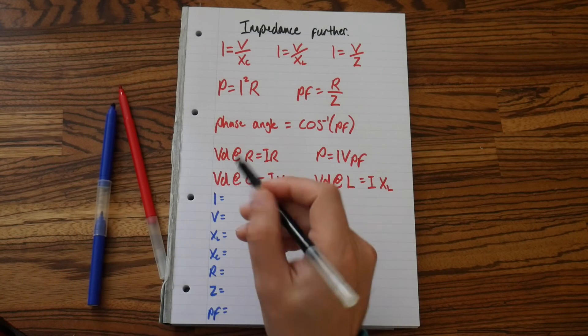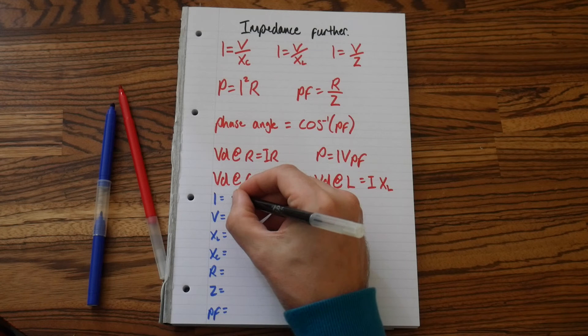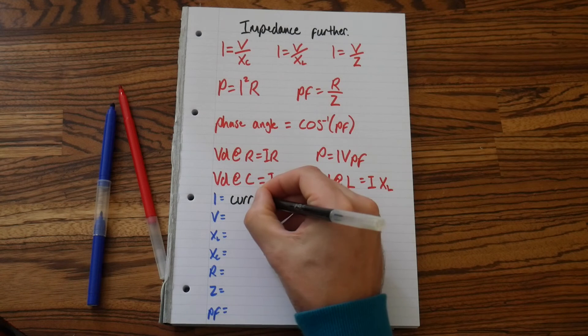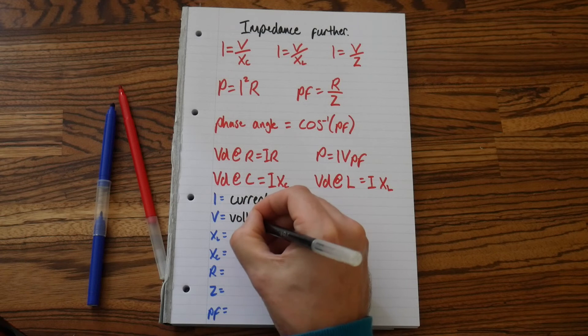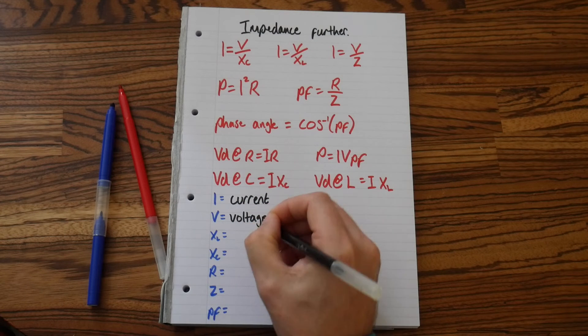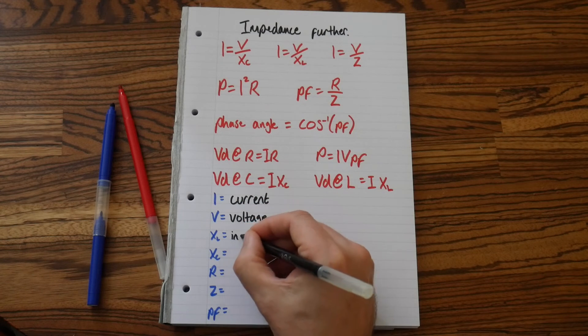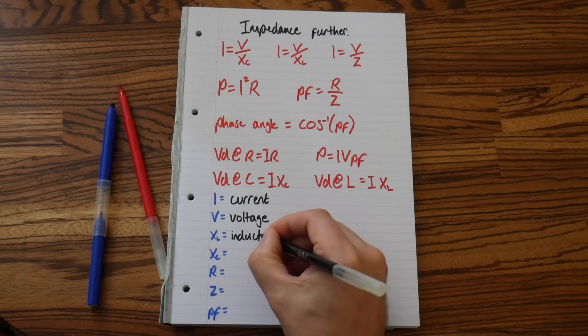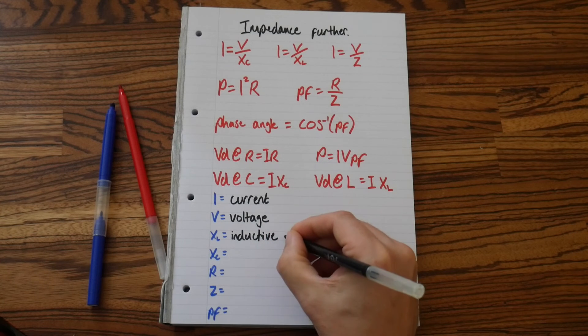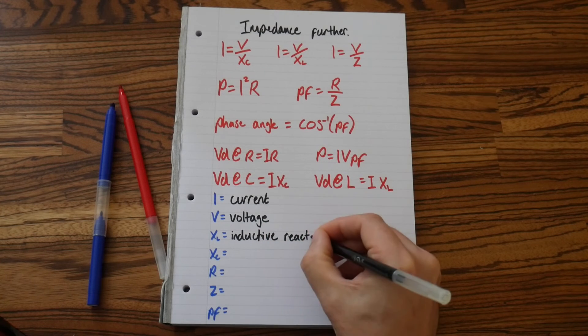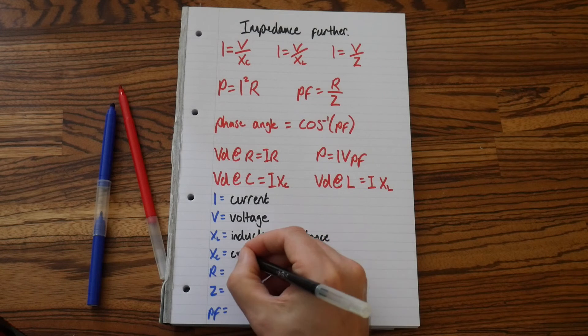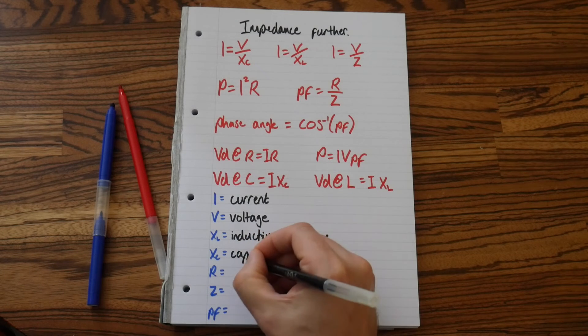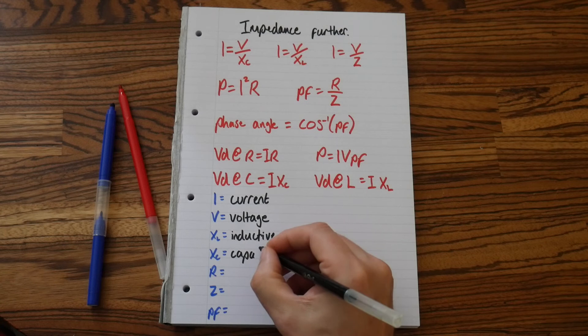So let's write down what they mean. I stands for current, V is voltage, XC is capacitive reactance.